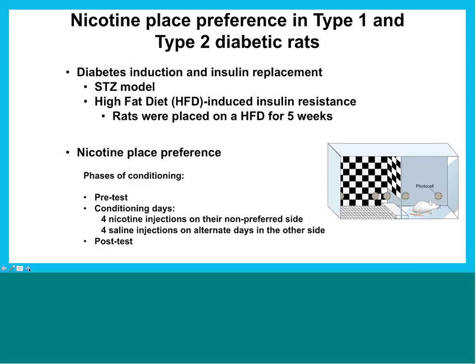We extended this finding by looking at the conditioned place preference (CPP) paradigm, which several speakers have already explained. We used two different models: the streptozotocin-induced type 1 model as before, and also a model similar to type 2 diabetes, where animals are given a high-fat diet regimen and thereby develop insulin resistance — making them a model of type 2 diabetes. We ran nicotine conditioned place preference studies using a standard procedure commonly used in other laboratories.